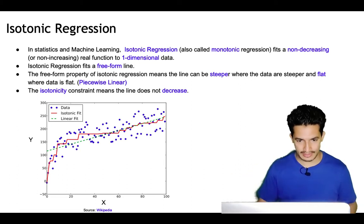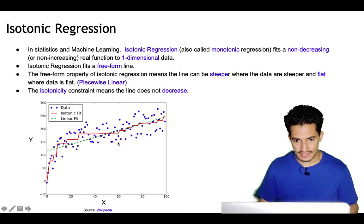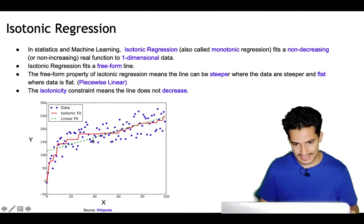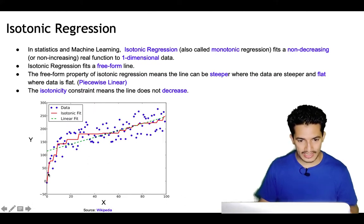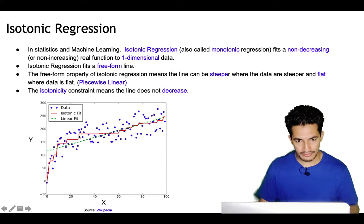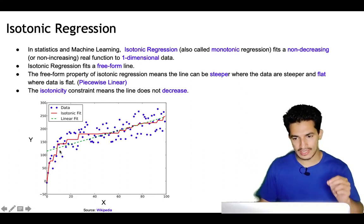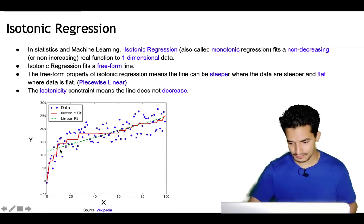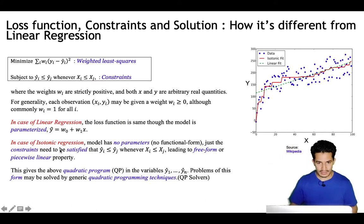In this figure we can see the blue dots are the scattered data points. If we fit a linear regression line to it, it's consistently increasing. But the isotonic regression line can be free-form — it chooses to be steeper when the data points are steep and flat when the data is flat.